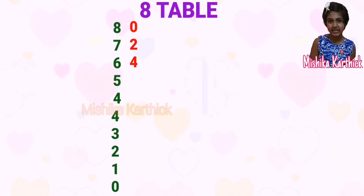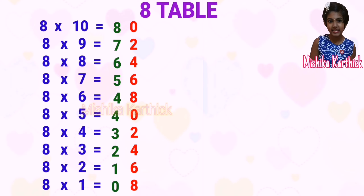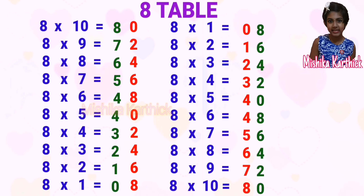Now we write the even numbers 0 to 8: 0, 2, 4, 6, 8. Once we reach 8 again, we repeat 0 to 8: 0, 2, 4, 6, 8. By writing the numbers in reverse order, we get the 8 times table from greatest to smallest.